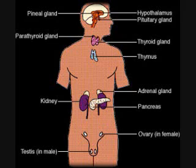Cortisol. Gland: Adrenal Cortex. Function: to increase resistance to stress, to increase blood glucose levels, and to decrease inflammation.